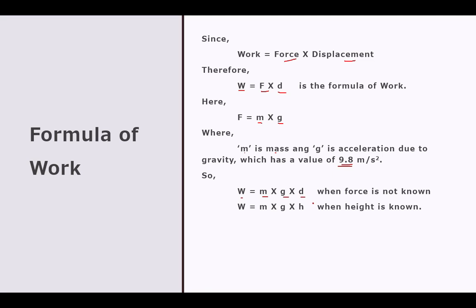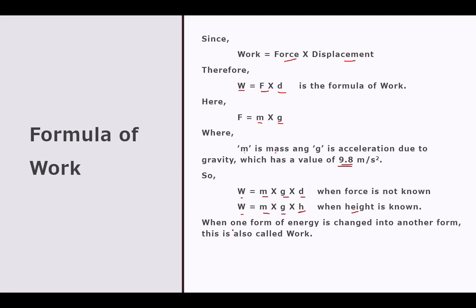But what if the displacement is not given and the object is moved upward? When the object is lifted, we will be given height. Because of that, the formula of work becomes W = M × g × H, where H means height. Similarly, when one form of energy changes into another form, this is also called work done. So work is also defined as the transformation of energy — the change of energy from one form to another form. Whenever this change of energy occurs, there is work done.